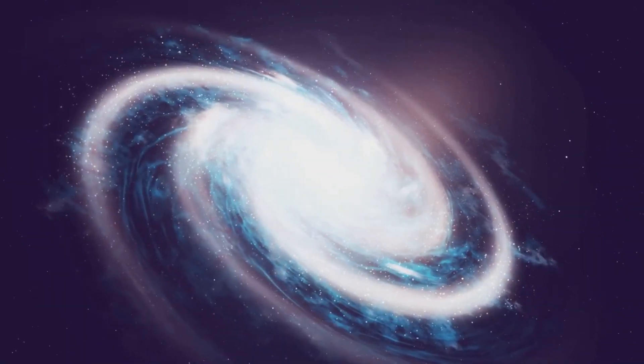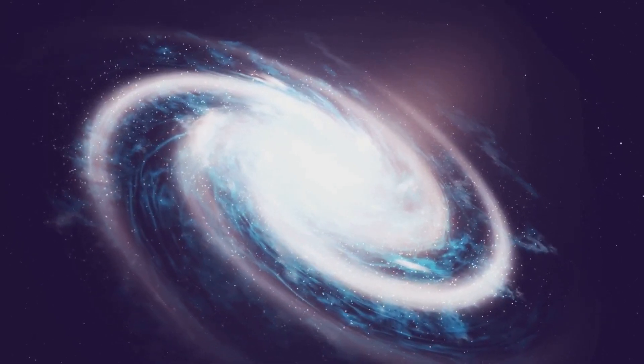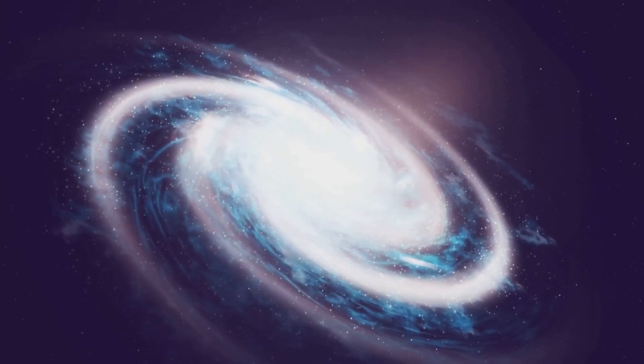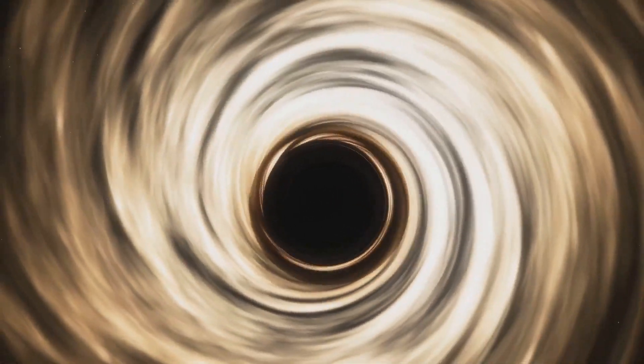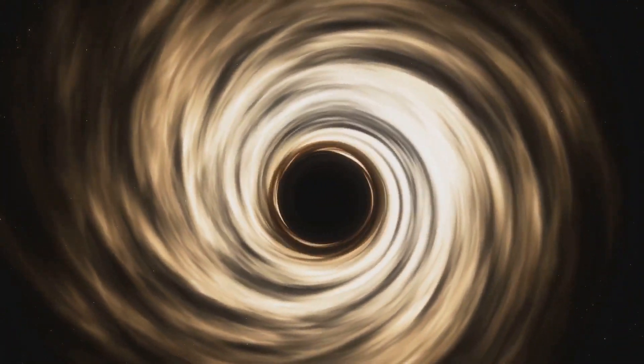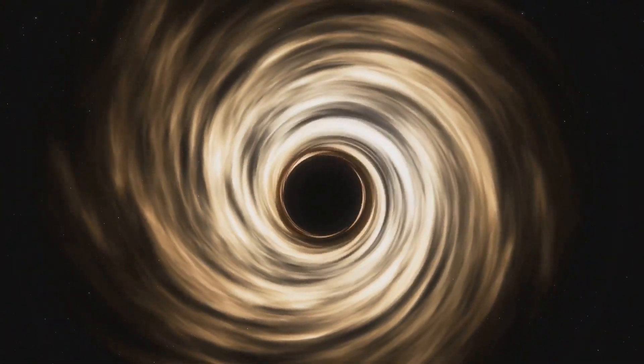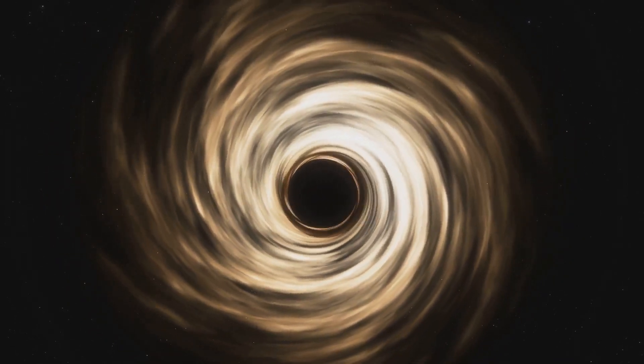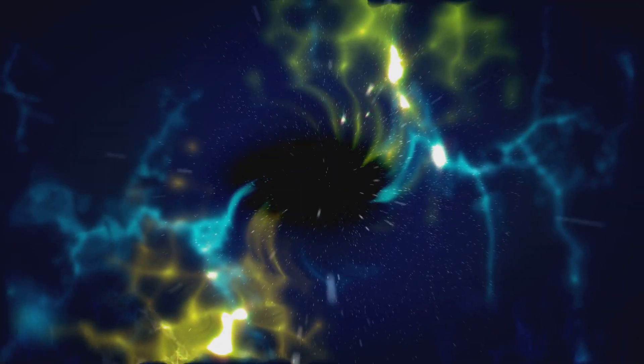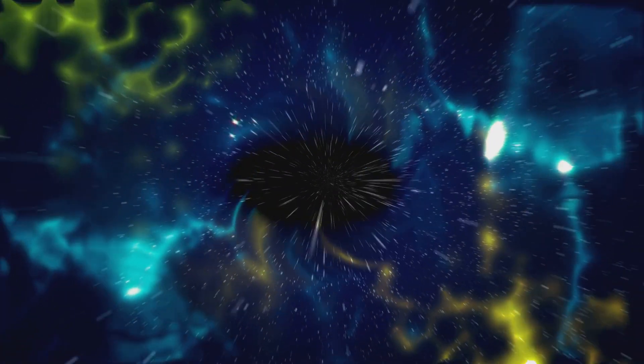At the other end of the spectrum are supermassive black holes, giants lurking at the centers of most, if not all, large galaxies. These gravitational behemoths can contain millions or even billions of times the mass of our sun, their influence extending far beyond their immediate surroundings. Between these two extremes lie intermediate-mass black holes, a more elusive class of black holes with masses ranging from hundreds to thousands of solar masses. These cosmic middleweights are thought to form through the merger of smaller black holes, or the collapse of extremely massive stars in dense star clusters.